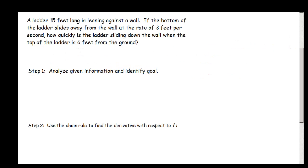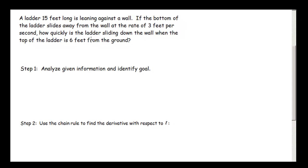Let's start with this first example. A ladder is 15 feet long and it's leaning against a wall. The bottom of the ladder is sliding away from the wall at a rate of 3 feet per second. How quickly is the ladder sliding down the wall when the top of the ladder is 6 feet from the ground?